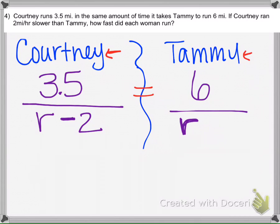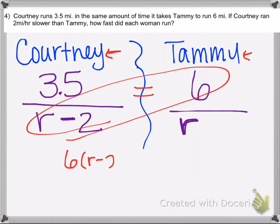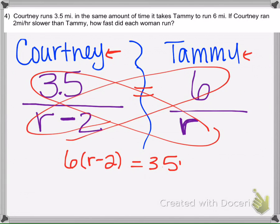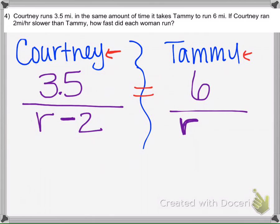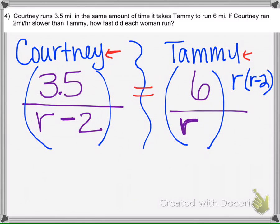So the next thing is we need to solve this. So you could do cross products, or the other way you can do it is finding a common denominator. So the common denominator would be R and R minus 2. So whatever we do to one side, we have to do to this side. So we have to multiply both sides by R times R minus 2.